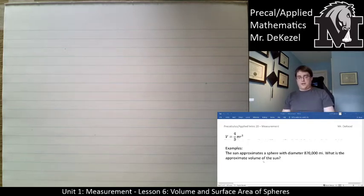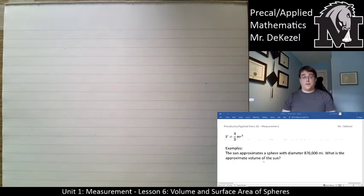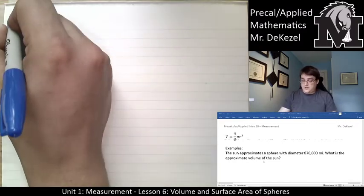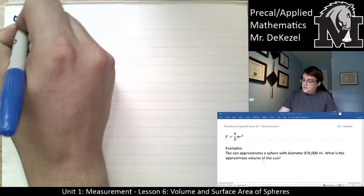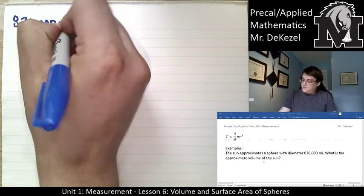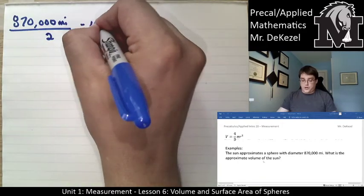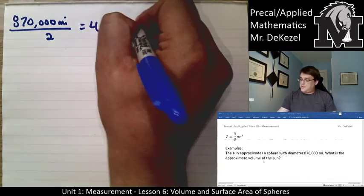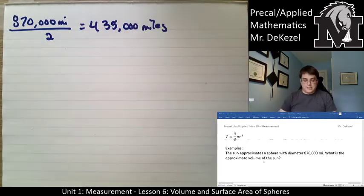So the first example tells us that the sun, a huge sphere, has a diameter of 870,000 miles. What is the approximate volume of the sun? So we have the diameter, but we need the radius. First thing to do is divide that by 2. So 870,000 miles divided by 2 gets us 435,000 miles. Sounds good.